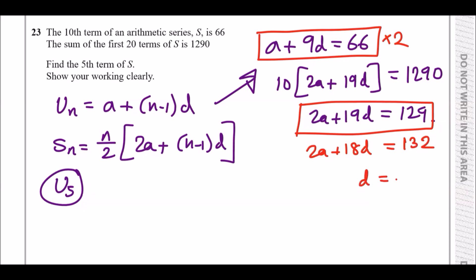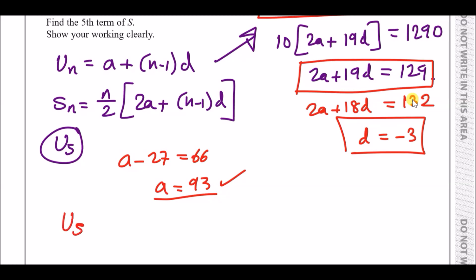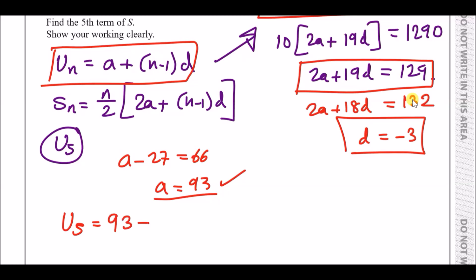With d equals minus 3, substitute back into the first equation: a plus 9 times minus 3 equals 66, so a minus 27 equals 66, giving a equals 93. For the fifth term u5: a plus (5 minus 1)d equals 93 plus 4 times minus 3 equals 93 minus 12 equals 81.